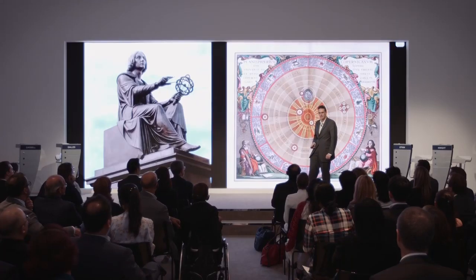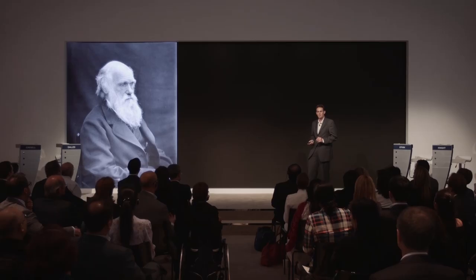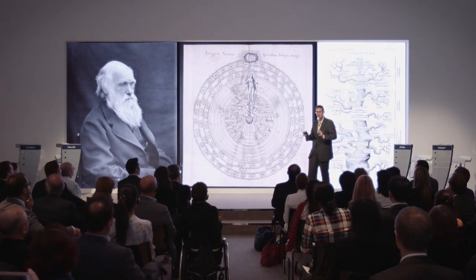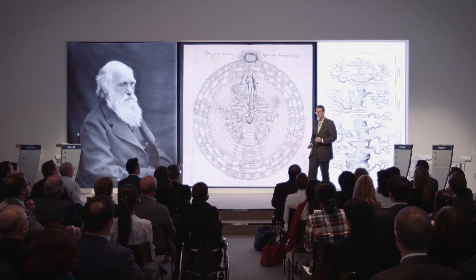The Darwinian Revolution made us realize that rather than being at the top of a great chain of being, instead we were just one twig on a tree of life with many branches that have all had the same time to evolve.